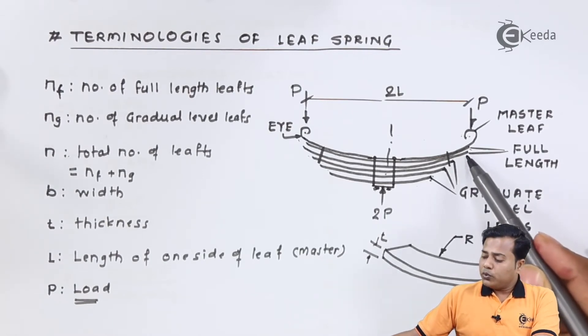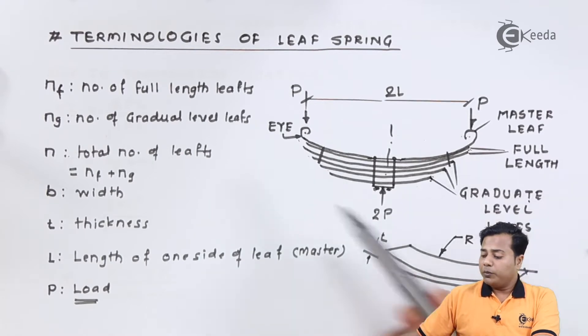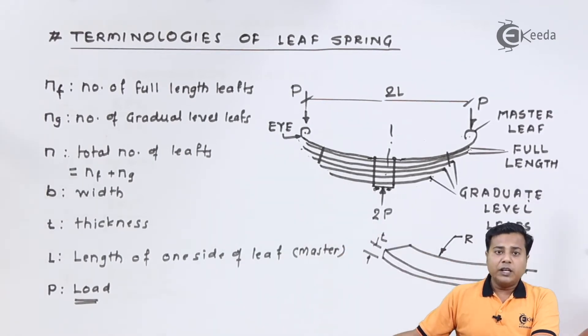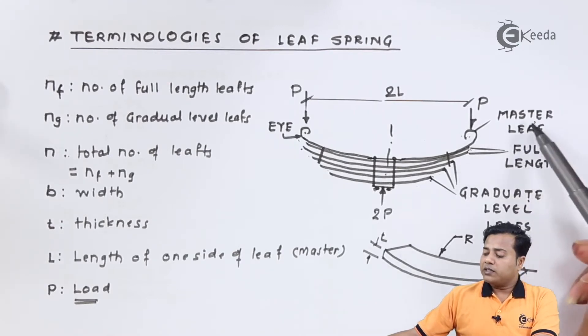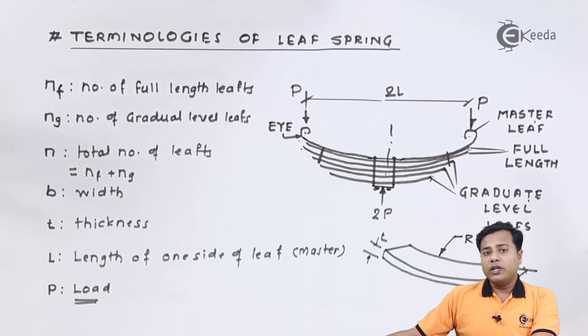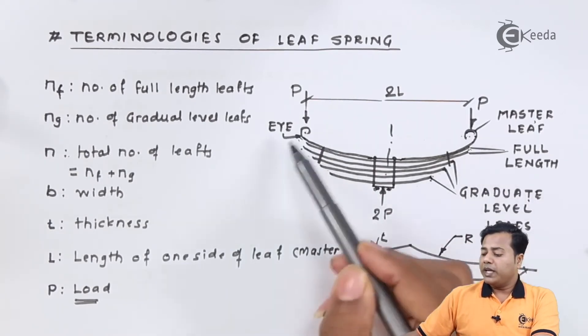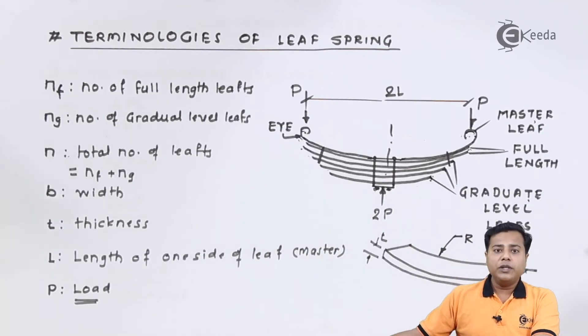Further, if you see, two leaf springs or two leaves of that particular spring appear to be of same length and they are called full length springs. They may be two or three numbers, and the last one is the master leaf. Master leaf is the longest one and it has the ends bent so as to form the eyes. These are called the eyes of the leaf spring.